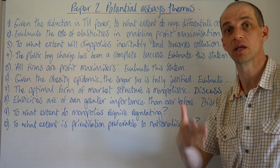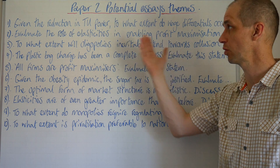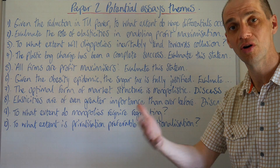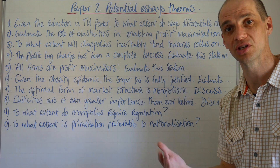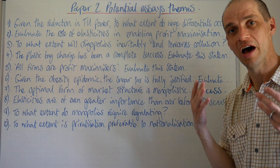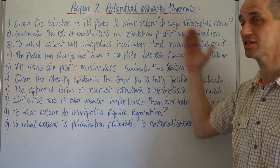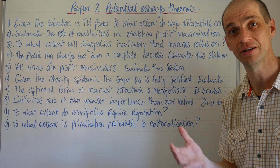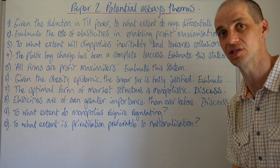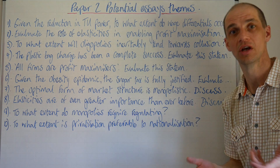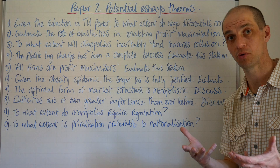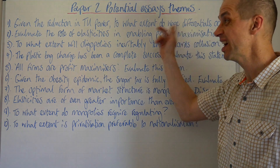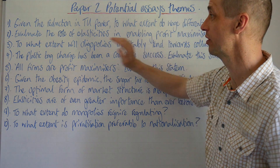For instance, cross elasticity of demand — covering substitutes and complementary goods — is very relevant here. And understanding income elasticity of demand and correlating that with economic growth in particular regions is also very important.